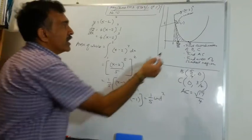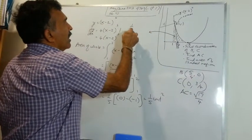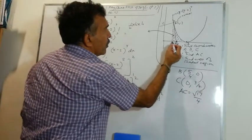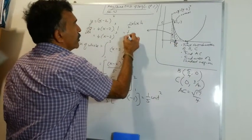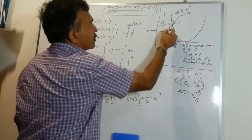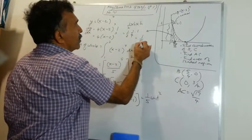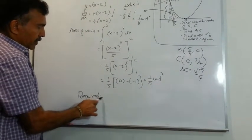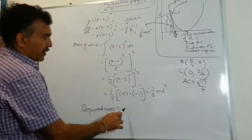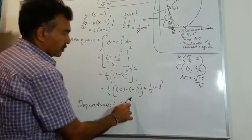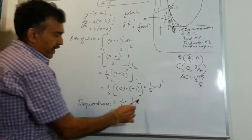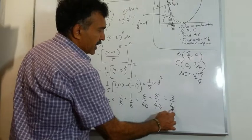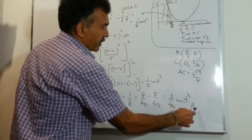Now we need the area of the triangle using half times base times height. The base is 5/4 minus 1 which is 1/4, and the height is 1, giving an area of 1/8 unit squared. Therefore the required shaded area equals the whole area minus the triangle area: 1/5 minus 1/8. That gives 8/40 minus 5/40, which equals 3/40 unit squared. And we are done.